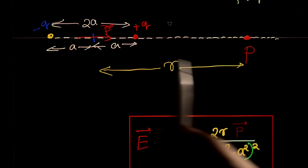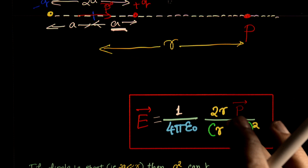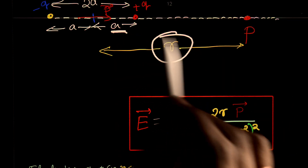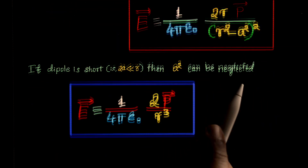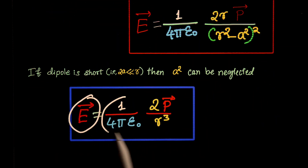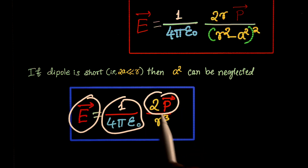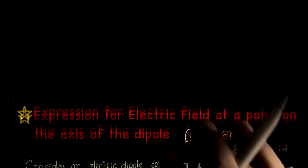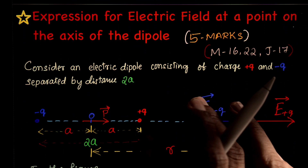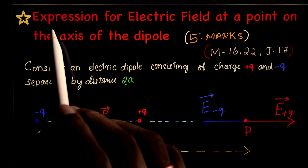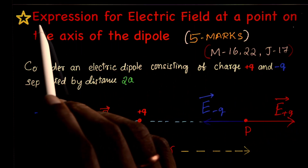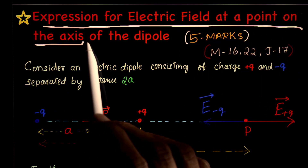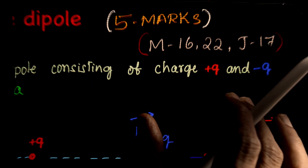Here, a is half the length of the dipole. If the length of the dipole is small compared to r, then the equation becomes E = (1/4πε₀) × 2r·p / r³. Now, how to answer this topic in the exam — the question is: derive the expression for electric field at a point on the axis or axial line of the dipole. That is a 5 marks topic.